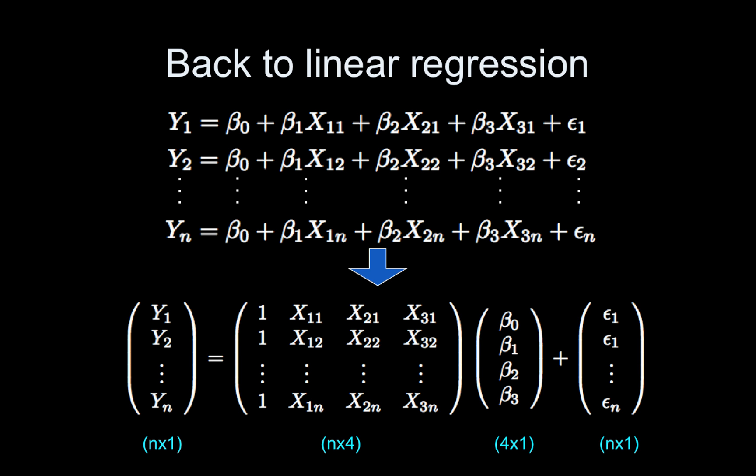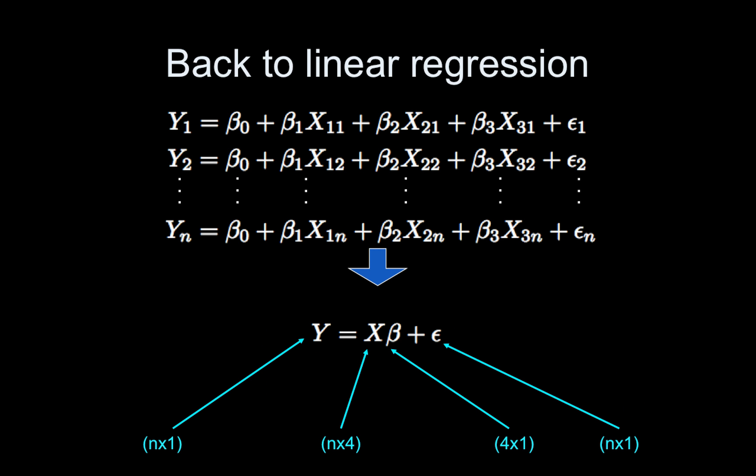Part of the reason I like to check dimensions — I'm not just checking whether they did it right. Often the dimensions help you remember or understand what the equation is doing. I can say, oh okay, this is one thing for each subject — that's why there are n rows. Then we can write that as a plain old matrix equation: y equals X beta plus epsilon. Just remember X is a matrix and beta is a vector.